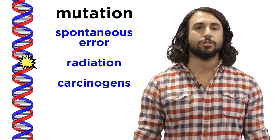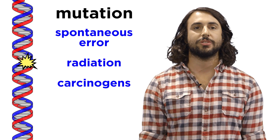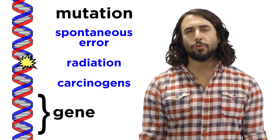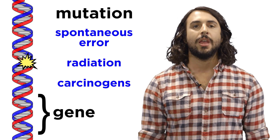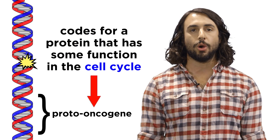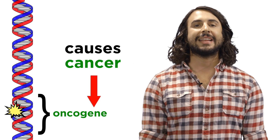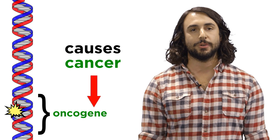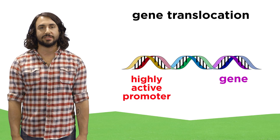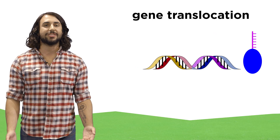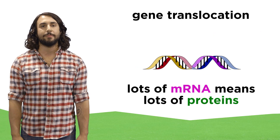We learned about how DNA can become mutated, either through spontaneous error during replication, or by external factors like UV radiation or carcinogens. Mutations that occur outside of any gene are extremely unlikely to have an impact on the organism. But if such a mutation occurs within a proto-oncogene — which is a gene that codes for proteins that stimulate routine cell growth and division — it can become an oncogene, which is a cancer-causing gene. This can occur in a few different ways. If the gene is accidentally translocated to a new part of the chromosome where it is adjacent to a particularly active promoter, the gene might be expressed much more frequently than normal, leading to excessive amounts of that protein.